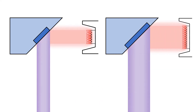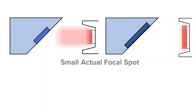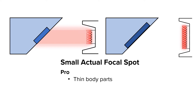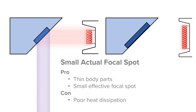There are a number of pros and cons to having a small or large actual focal spot and a number of pros and cons to having a small or large effective focal spot. The small actual focal spot has a few pros and cons. A con of the small actual focal spot is that it is poor at dissipating heat because less of the anode surface area is being used.